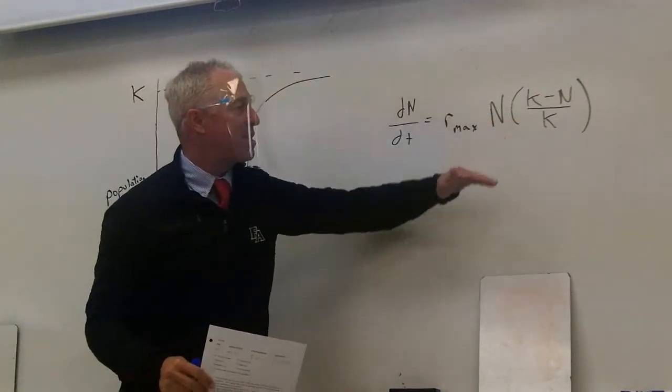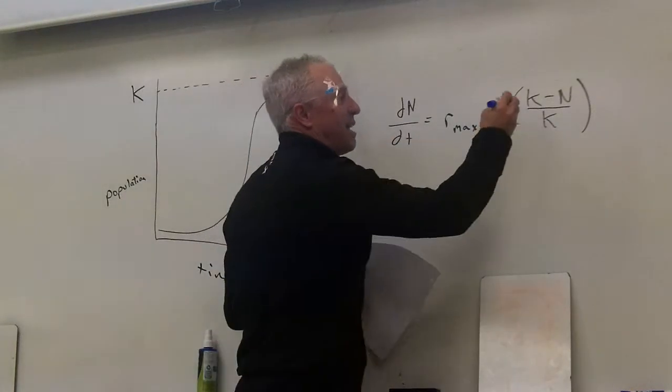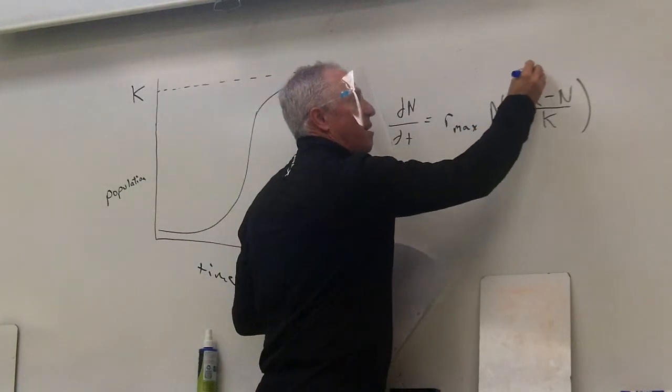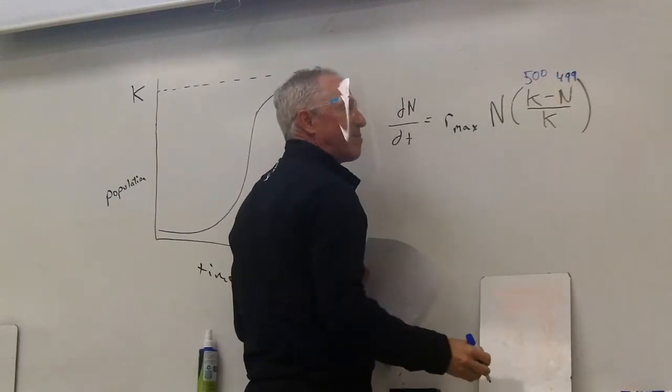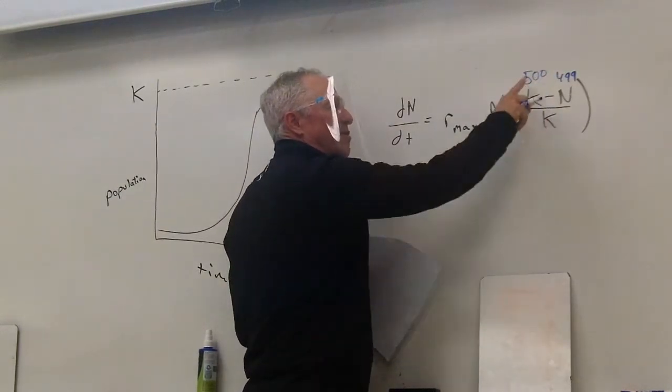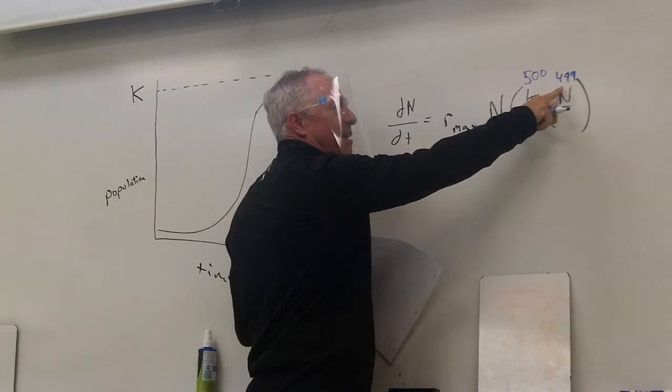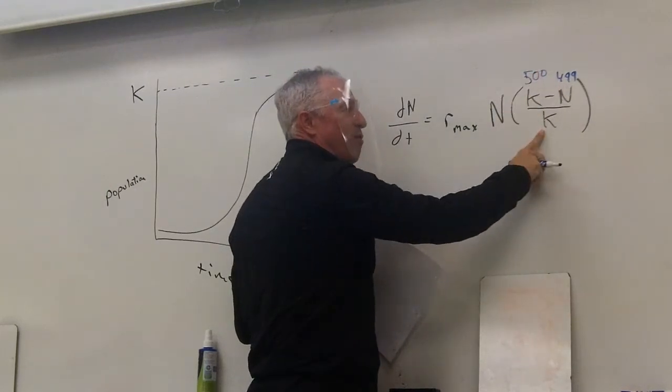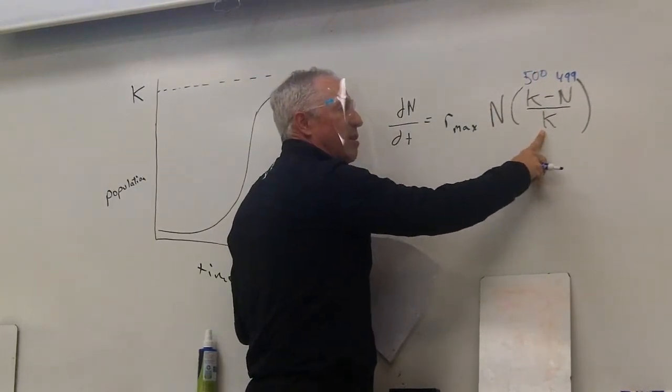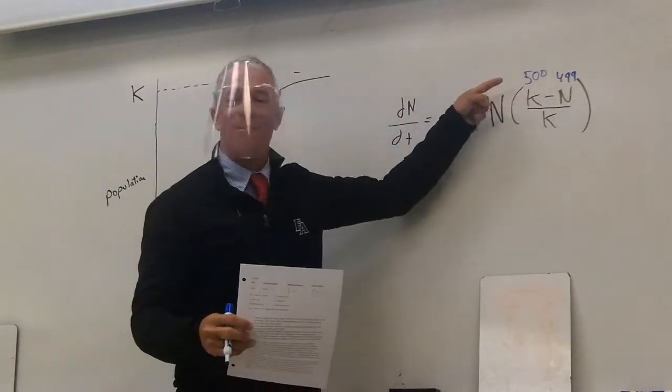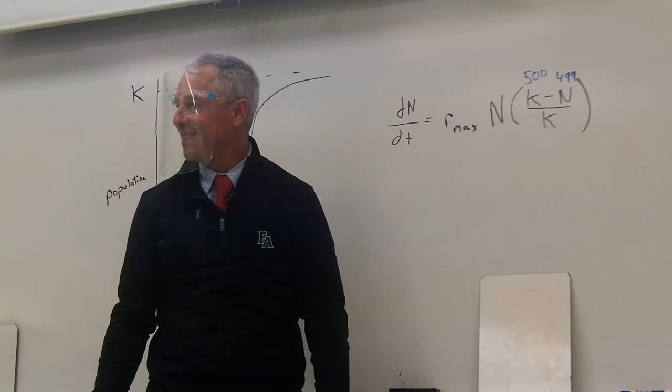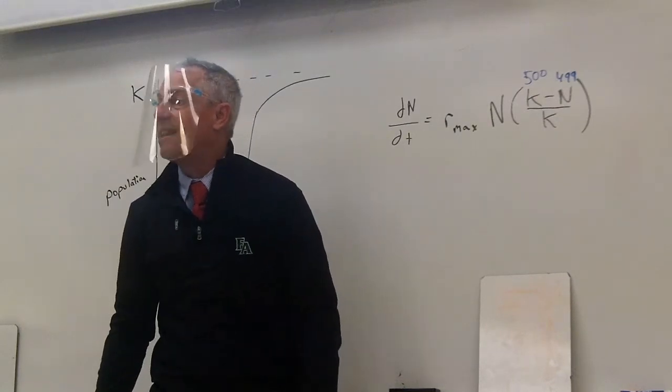And if you're right up against the carrying capacity, let's say the carrying capacity was 500 and your population was 499. What's 500 minus 499? One. One. What's one over 500? A very small number. A very small number. So you're not going to be able to go up very much if you're right up against the carrying capacity.